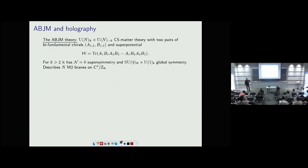ABJM on S³: ABJM is a Chern-Simons matter theory of the type we heard about this morning, except that I'm insisting on having quite a bit of supersymmetry — N=6 or more. It has an integer N specifying the rank of the gauge group and an integer k specifying the Chern-Simons level. It has a specific superpotential in N=2 notation, and its claim to fame is that it describes the low-energy physics of N M2-branes in M-theory.